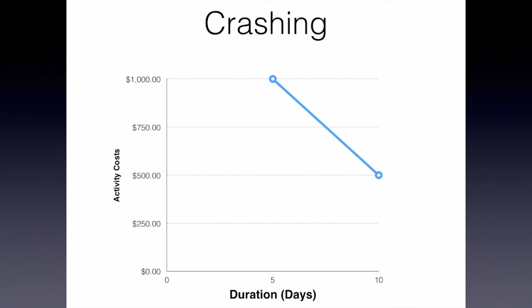Once we have that amount for our tasks, we keep doing that for all the tasks on our critical path and see which are crashable. We may have some that we simply cannot reduce in time no matter how much more money we pour into them, and each specific task will have some limit. In this case it's five days. We couldn't, for example, crash this to just three seconds if we put $12 million into it — it's just not reasonable to consider.